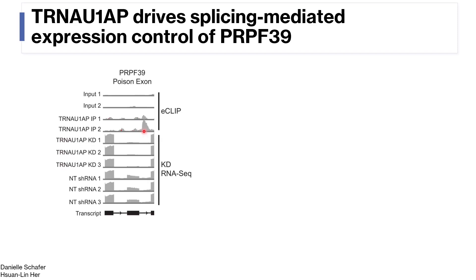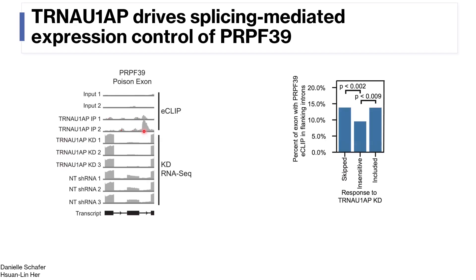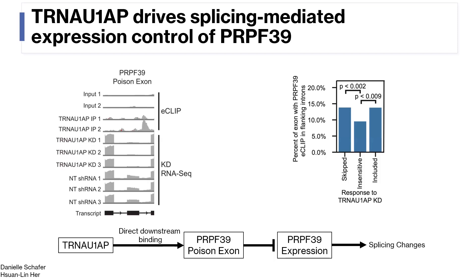Bringing it back to our initial question: are the knockdown-sensitive exons driven by tRNA1AP's action on PRPF39? We asked this by checking to see if PRPF39 binds these knockdown-sensitive exons at a higher rate than the rest of the transcriptome, and we find that it does. Altogether, this lets us build a model where tRNA1AP binds downstream of the PRPF39 poison exon, which inhibits its expression level, leading to widespread splicing changes.